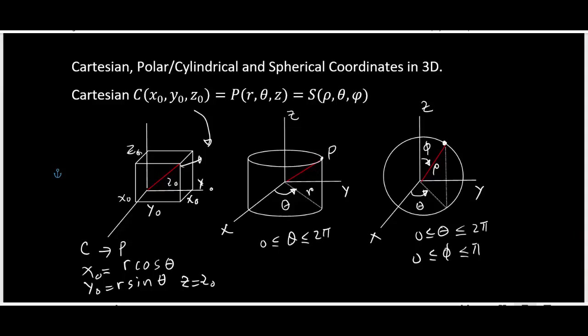Going from Cartesian to spherical coordinates, r becomes rho. So x₀ = ρ cosθ sinφ, y₀ = ρ sinθ sinφ, and z₀ = ρ cosφ. These are the conversion formulas.